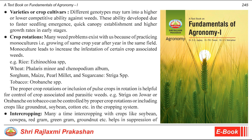Examples: Rice — Echinochloa spp.; Wheat — Phalaris minor and Chenopodium album; Sorghum, Maize, Pearl millet, and Sugarcane — Striga spp.; Tobacco — Orobanche spp. Proper crop rotation or inclusion of pulse crops in rotation is helpful for control of crop-associated and parasitic weeds. For example, Striga on jowar or Orobanche on tobacco can be controlled by proper crop rotation or by including crops like groundnut, soybean, cotton, etc. in the cropping system.